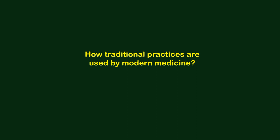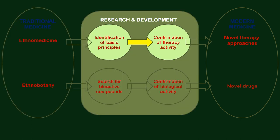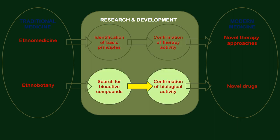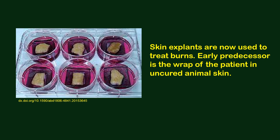How are traditional practices used by modern medicine? It is a several-step process. First, information from different sources is collected and examined by experts. Ethnomedicine practices are examined for identification of actual principles and their adaptation to current procedures. Ethnobotany information is used for identification of bioactive compounds, followed by confirmation of their properties. Upon success, these novel practices or drugs are implemented by modern medicine. For example, skin explants are now used to treat burns; their early predecessor is the rubbing of the patient in uncured animal skin.